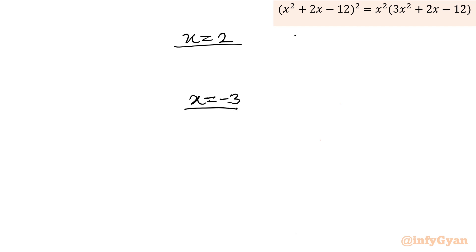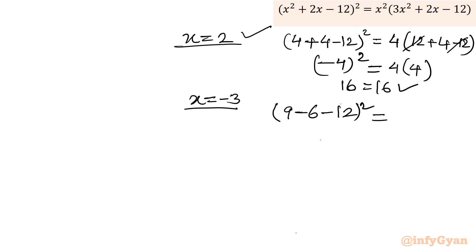Let us verify. So 2 square, so 4 plus 2 times 2, 4 minus 12 whole square LHS. RHS will be 2 square 4, 2 square 4 times 3, 12 plus 4 minus 12.